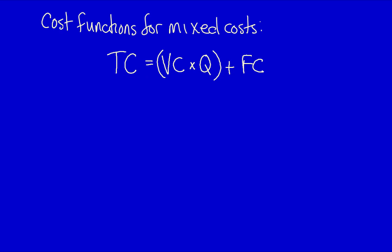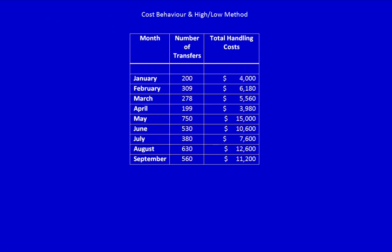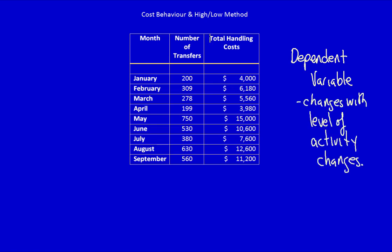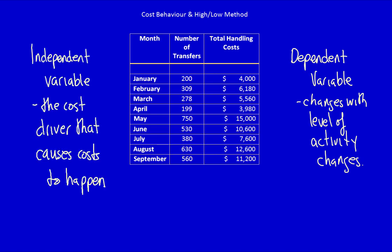Let's check out an example. First, we have to decide what is the dependent variable. The dependent variable is what we want to predict at different levels of activity. It's the thing that changes with the level of activity. Second, we have to decide on the independent variable. The independent variable is the cost driver, the activity that causes costs to happen. In this case, we're looking at the cost of transferring materials to different parts of the factory.